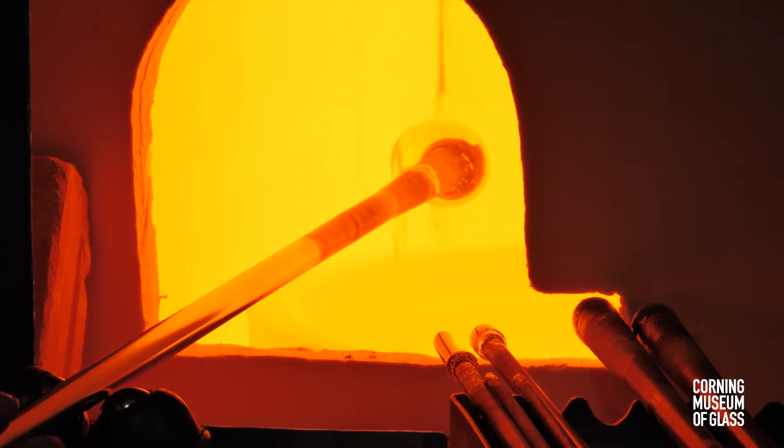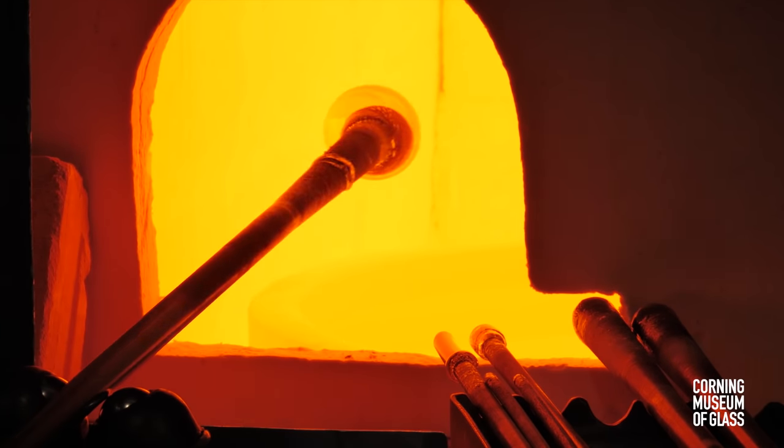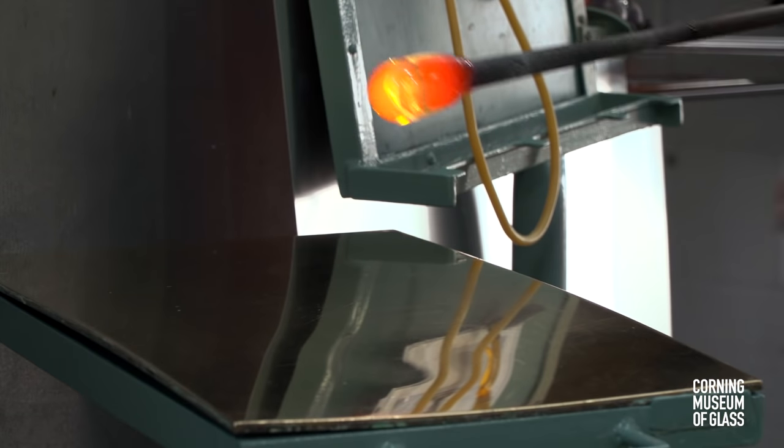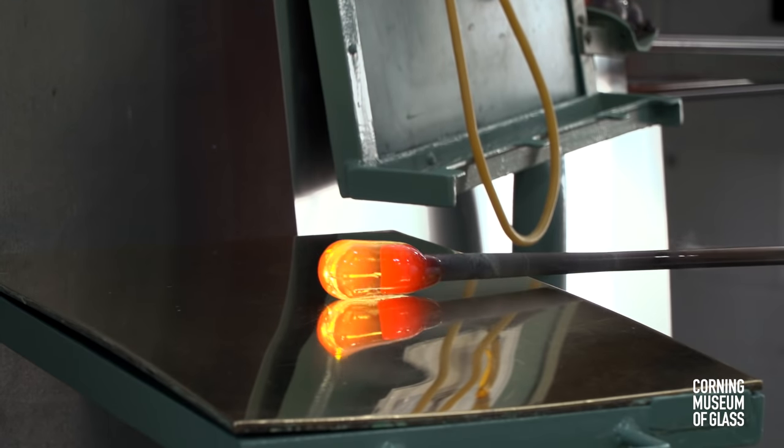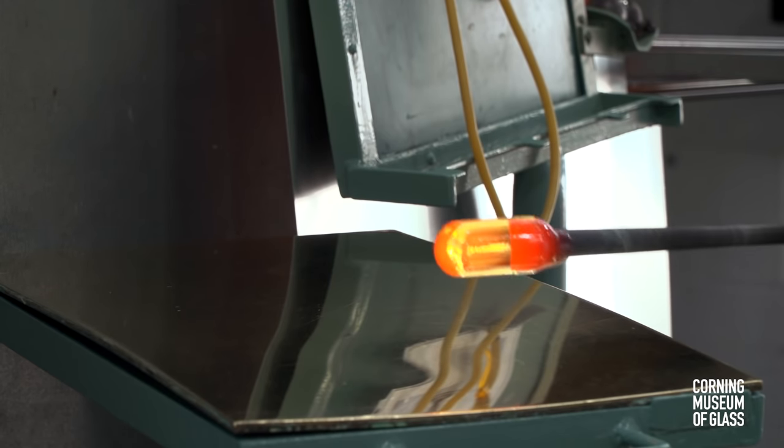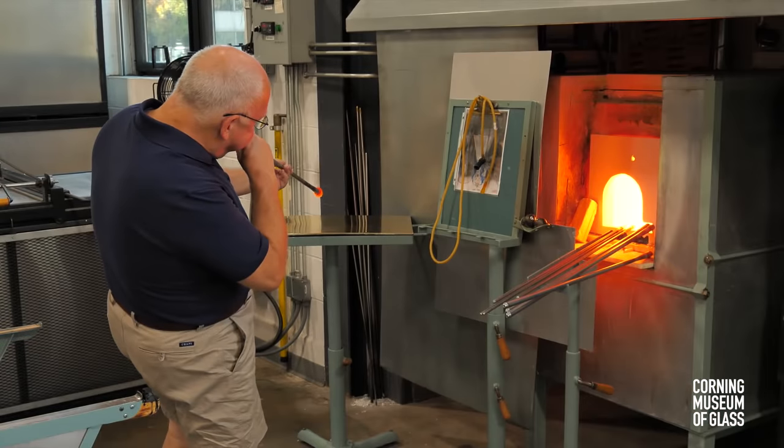The vessel begins with a small gather of transparent glass on the end of a blowpipe. The glass is marvered, and this elongates the gather.